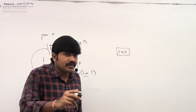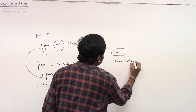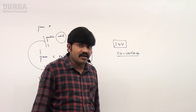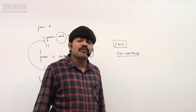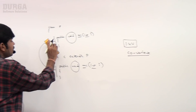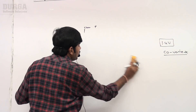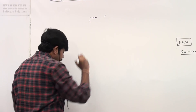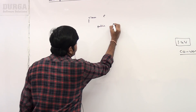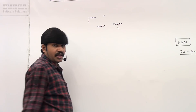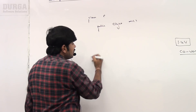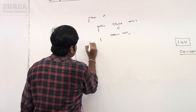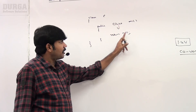From 1.5 version onwards, covariant return types are also allowed. What is the meaning of covariant return type? Let me give a small example. Here I have parent class P — assume the parent class method return type is Object: public Object m1(). It needs to return some object, so return null is acceptable.